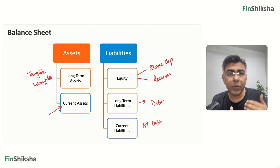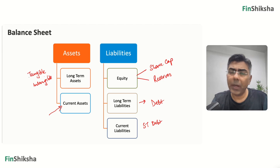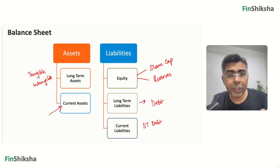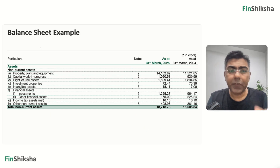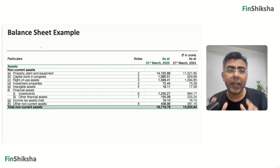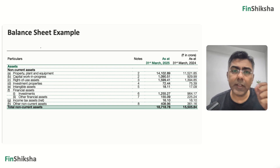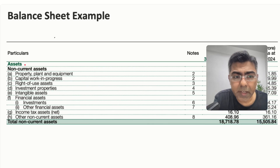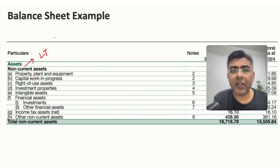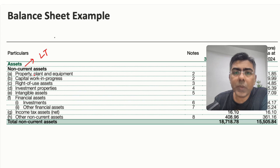Without much ado, we'll dive right into the financial statements of a particular company — we'll pick up DMART and look at its balance sheet, decoding the line items within it. The first element on the asset side is the long-term assets, also called non-current assets. And you start with the first line item: property, plant and equipment.